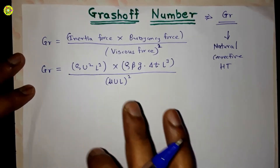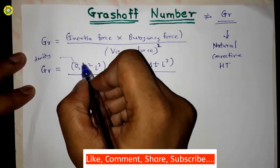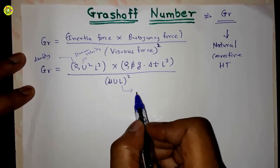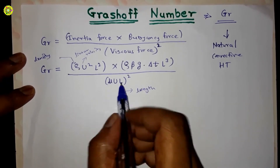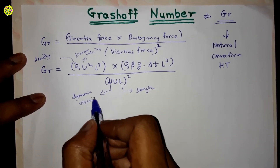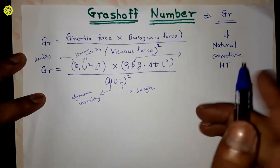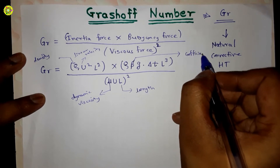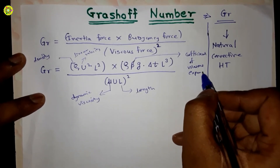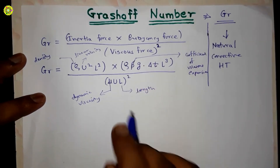Let us define the variables: ρ is density, u is linear velocity, L is length, μ is dynamic viscosity, β is the coefficient of volume expansion, ΔT is the temperature difference, and g is acceleration due to gravity.